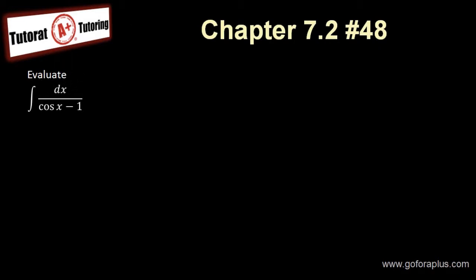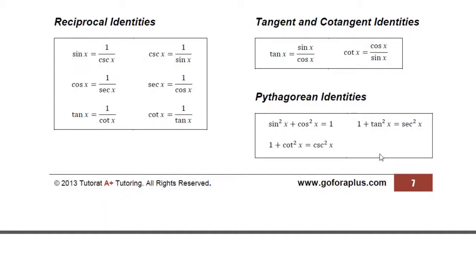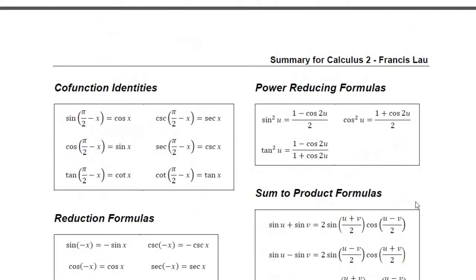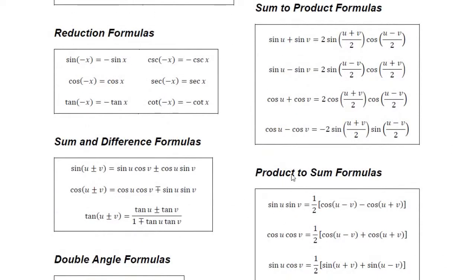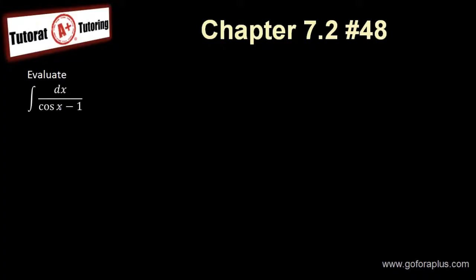Now to evaluate this integral, what can we think of? Right away, I see that I don't have cos squared. Because in most of the identities — if you look at the identities here — it's basically cos squared. You have most of the identities with cos squared; it's rare that you have only cos itself. So what can we do about this? I would actually multiply top and bottom with the conjugate, which is (cos x + 1) over (cos x + 1), top and bottom.